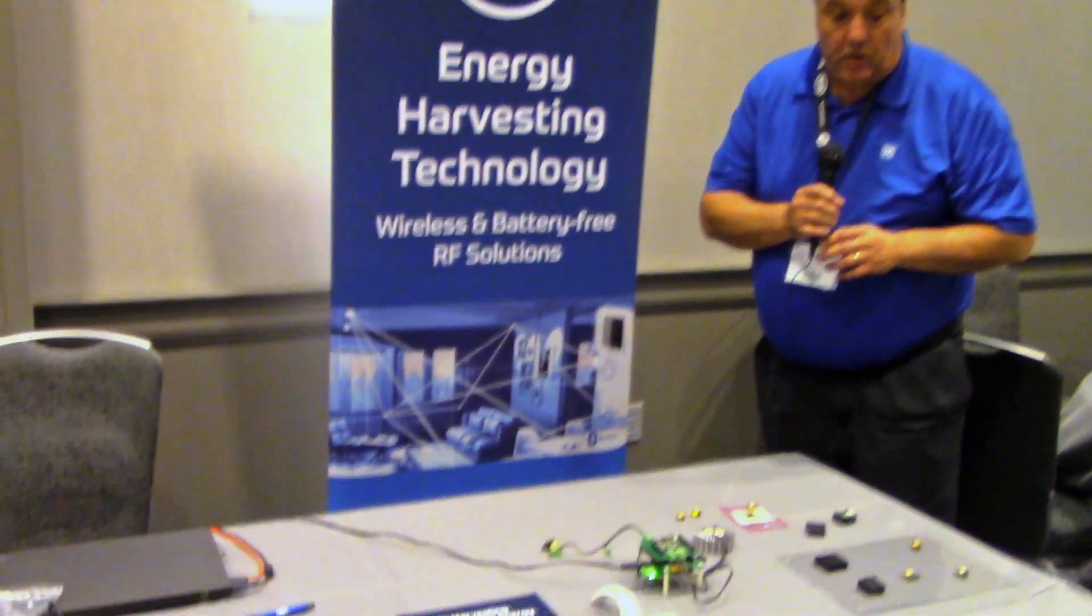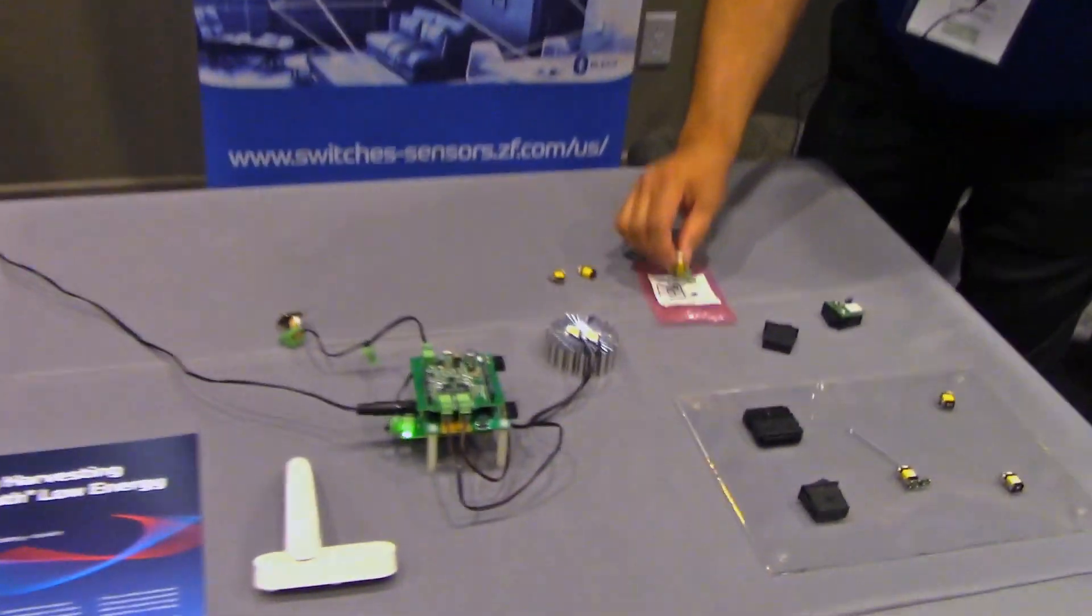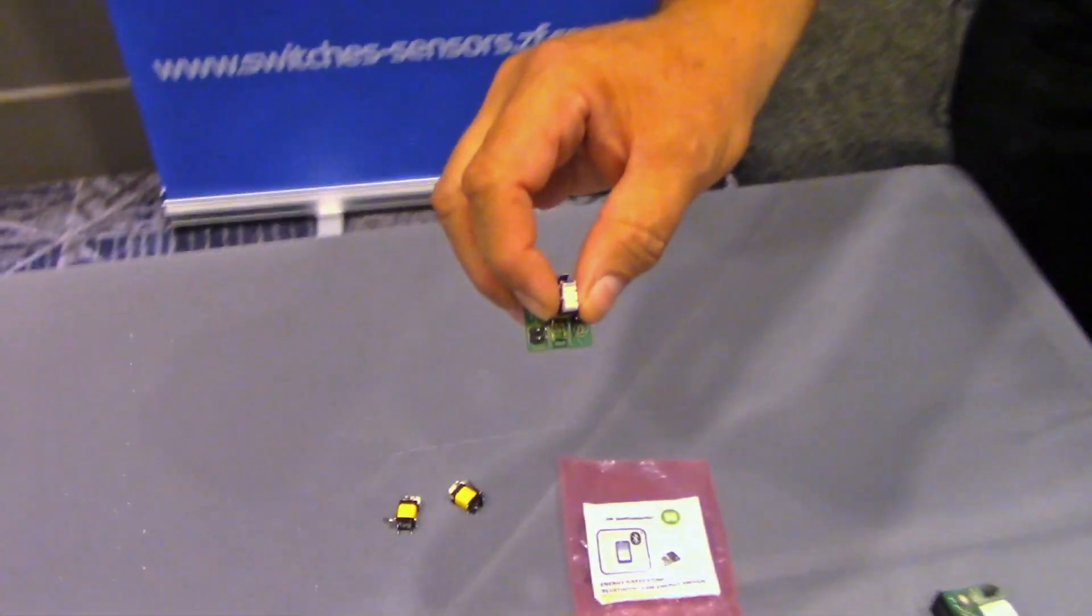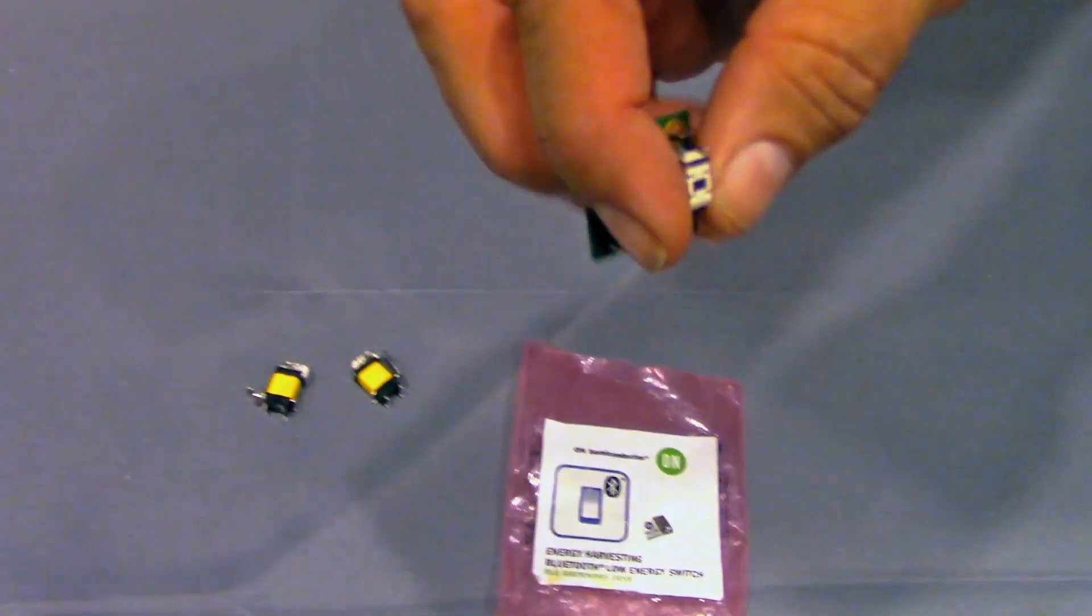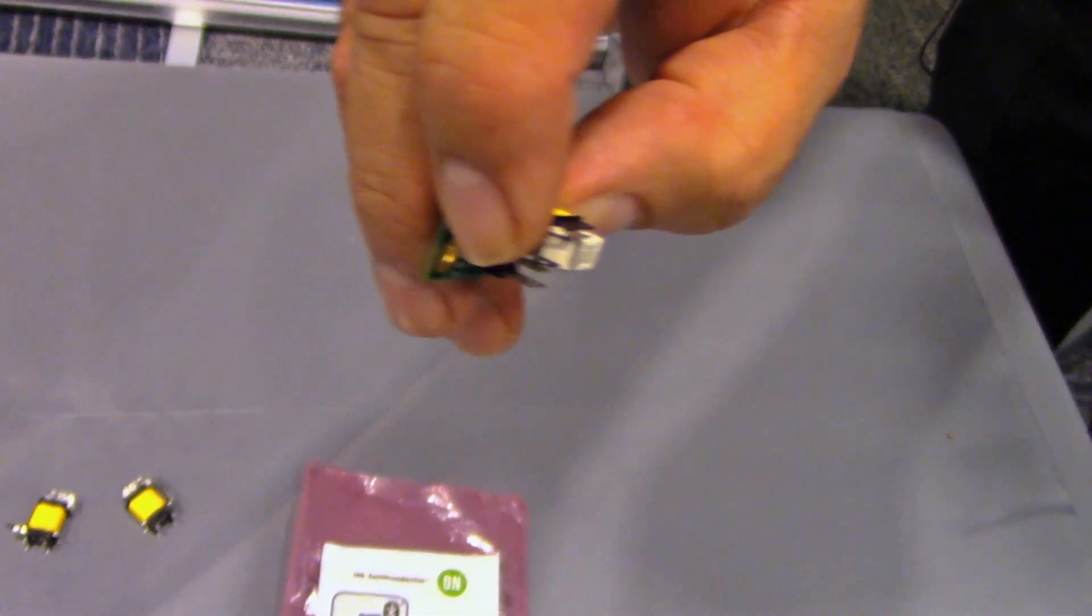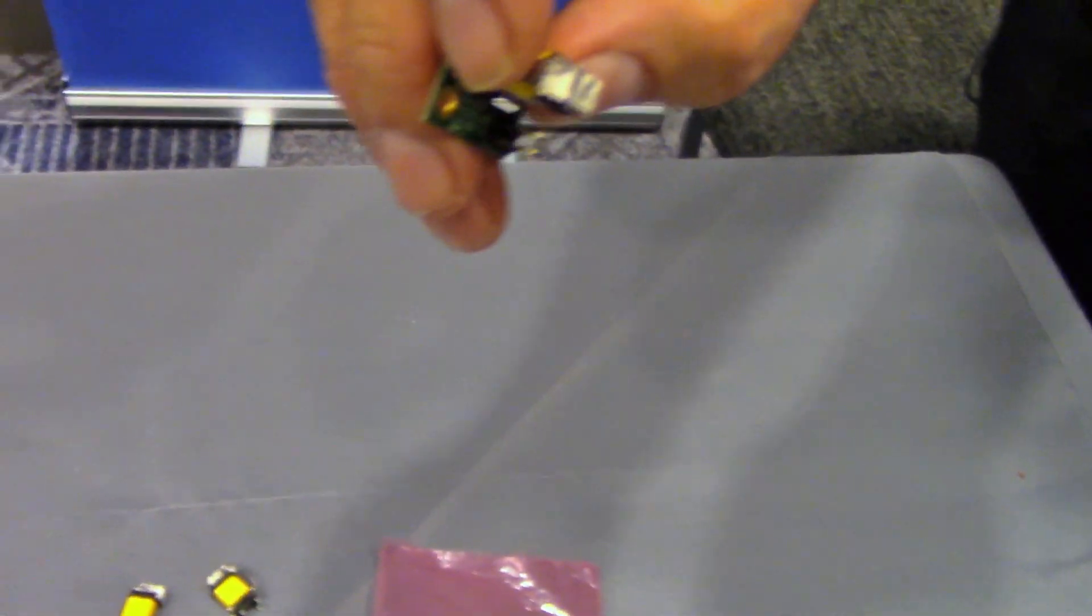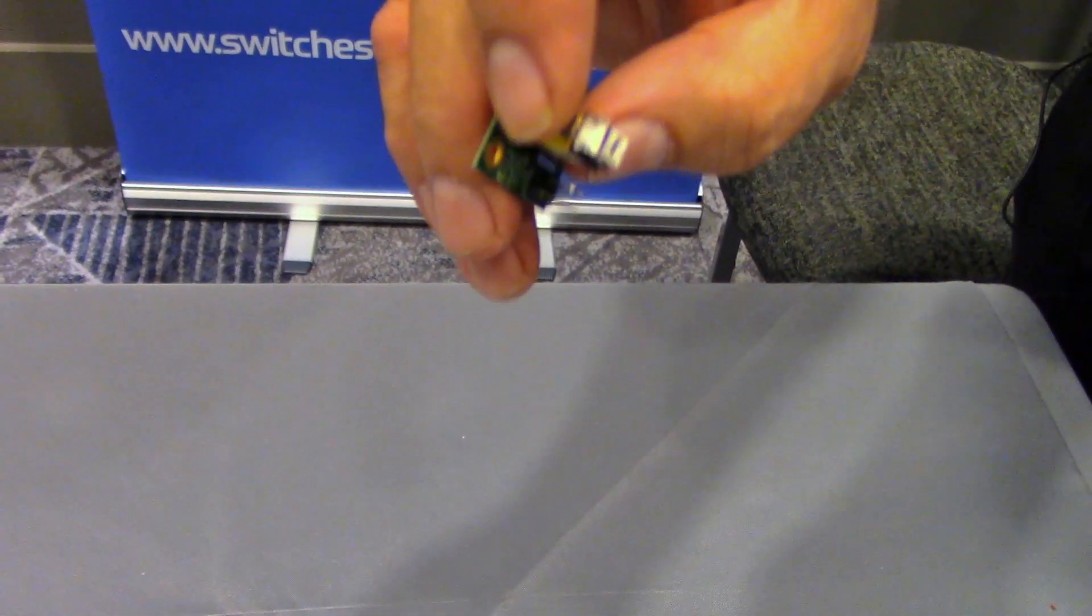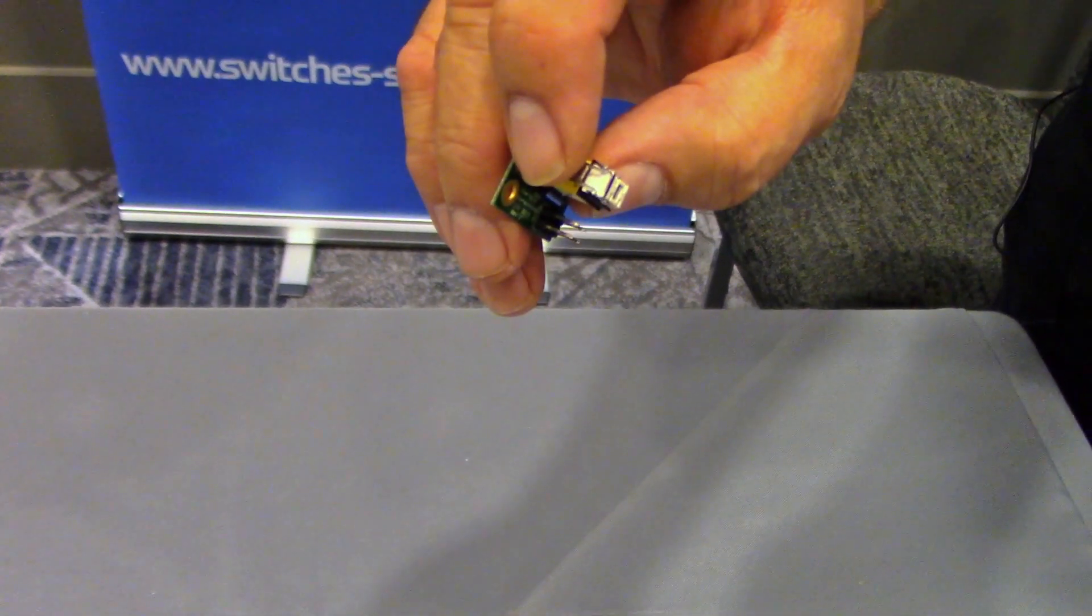The products we're showing here, this is the Onn reference transmitter. It has our energy harvesting switch on top. When you depress it and release it, it sends a pulse identifying the switch and that goes to any Bluetooth Low Energy receiver.